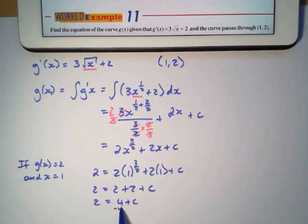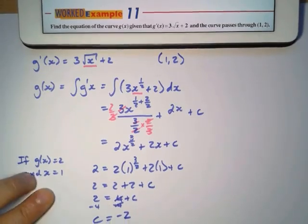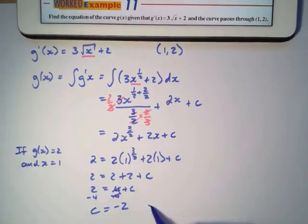Subtract 4 on both sides. C will equal negative 2. This will give me one answer.